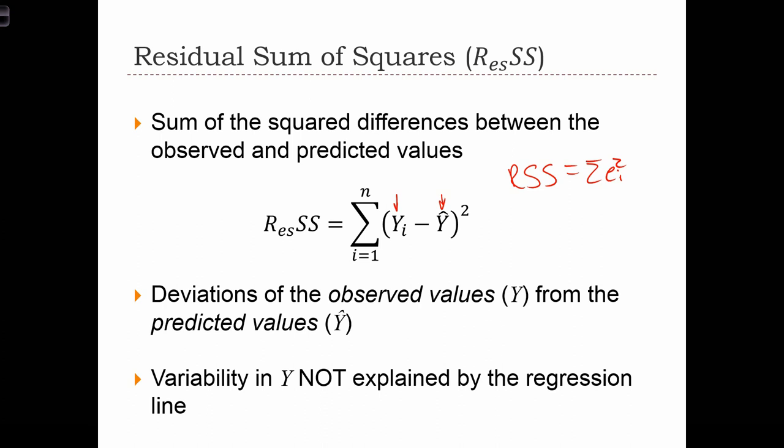This quantity of ResSS is the variability in y that's not explained by the regression line. It's the amount of variance left over after accounting for the regression line.